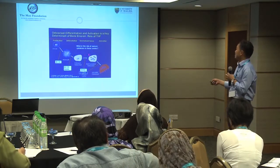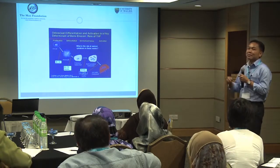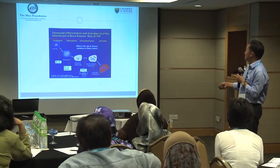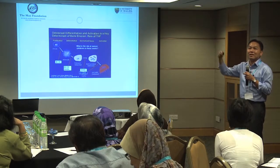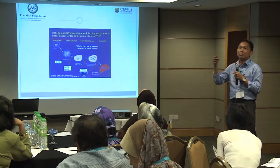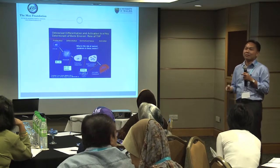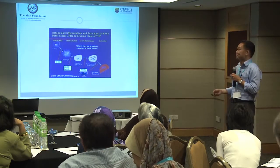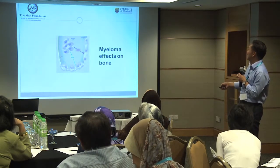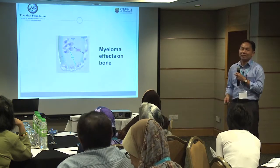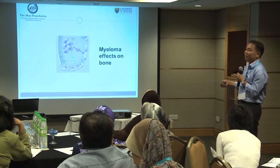What happens when you have multiple myeloma? Multiple myeloma produces substances called cytokines that promote the activity of osteoclast, increasing osteoclast activity. Therefore you remove more bone rather than forming bone. That's why you get osteopenia, osteoporosis, lytic lesions, and eventually fractures. Myeloma's effect on bone is to stimulate osteoclast and suppress osteoblast activity — the balance is gone and there's more resorption than formation of bone.